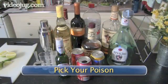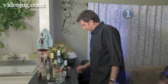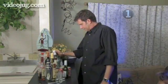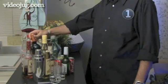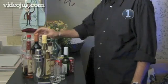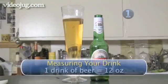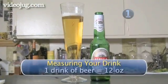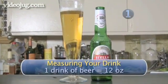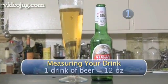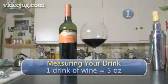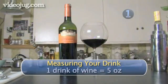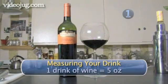Step 1: Pick Your Poison. The first step in determining your BAC is knowing the alcohol content of your drink of choice. You also need to know what determines a standard drink. Beer is usually 4% alcohol, but this varies depending on the type of beer — your best bet is to check the label. One drink of wine is measured as 5 ounces.